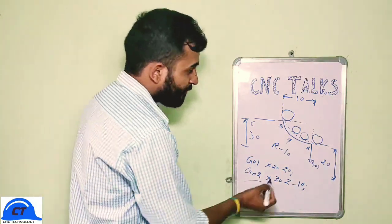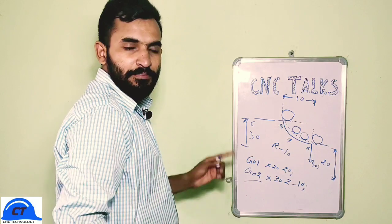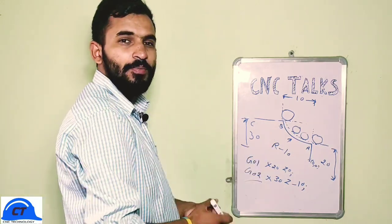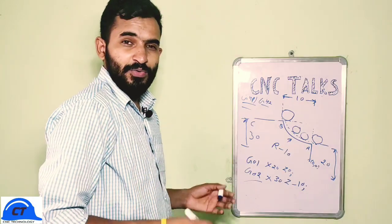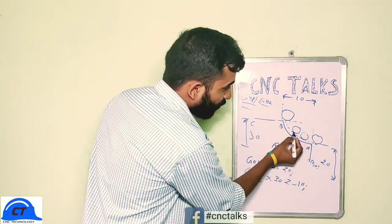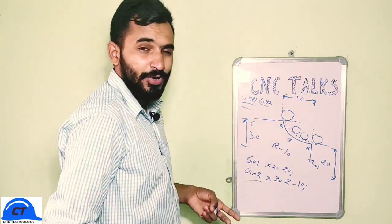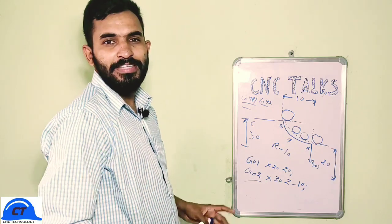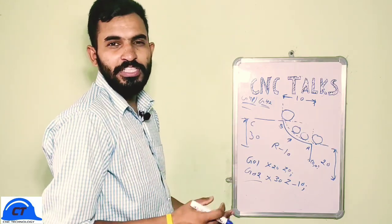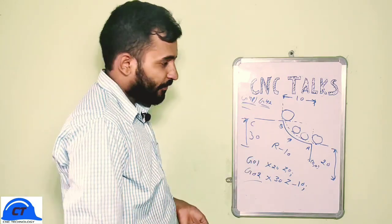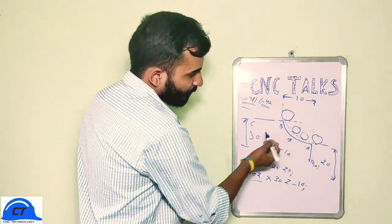We need the correct tool path for the exact arc size required — this is the compensation problem, and we can easily resolve it by giving G41 or G42. Without compensation we would need to find coordinates according to each different cutting edge, which is extremely hard to calculate. That is why it is simpler to use G41 and G42 — the machine will automatically calculate the exact coordinates according to the different cutting edge, giving us the exact profile we need.